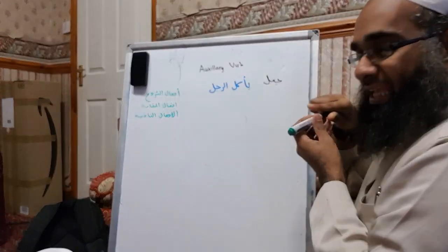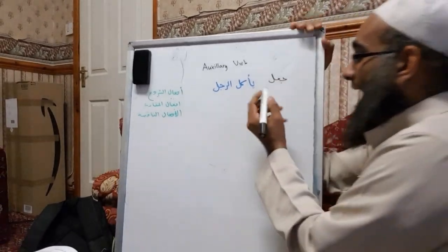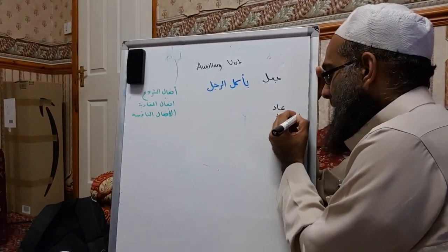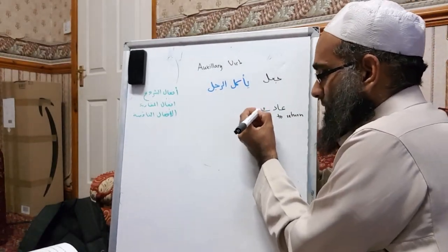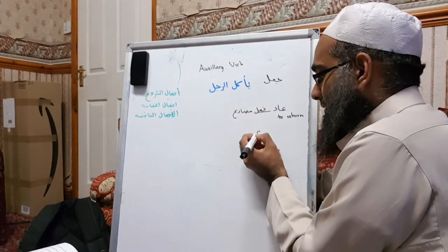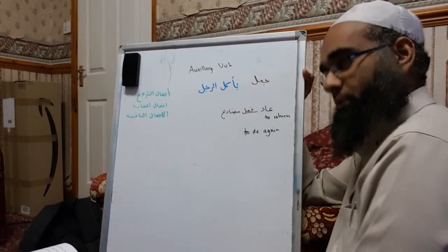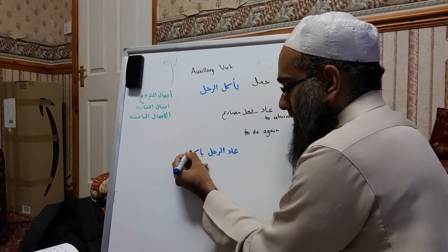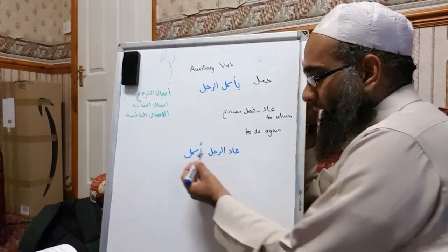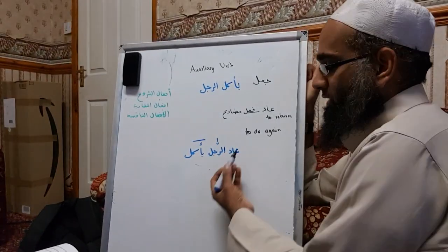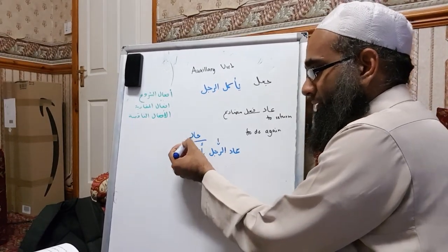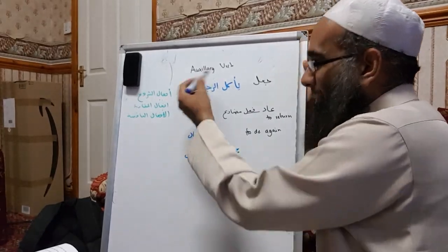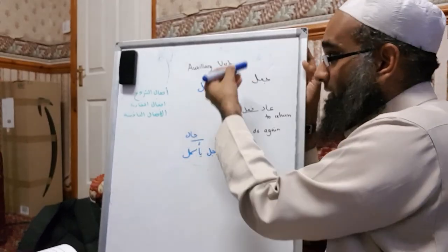Now one that is also commonly used but not actually labeled as one — they make it a hal — but you can also count it as an auxiliary verb, is the word 'aada.' Aada literally means to return, but it's used with a fa'al-muqaraba structure, and it translates as to do again. For example, 'aada rajulu ya'kulu' means the man started to eat again. Grammarians say aada is the fi'l and ya'kulu is the hal, but it has a similar auxiliary verb meaning.